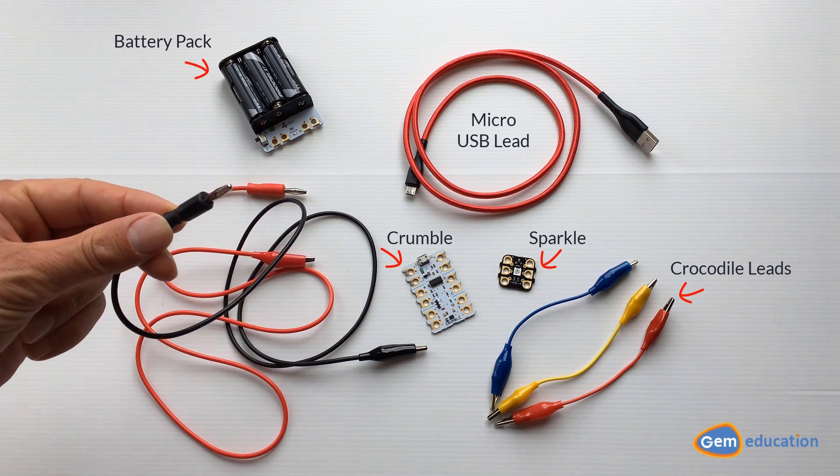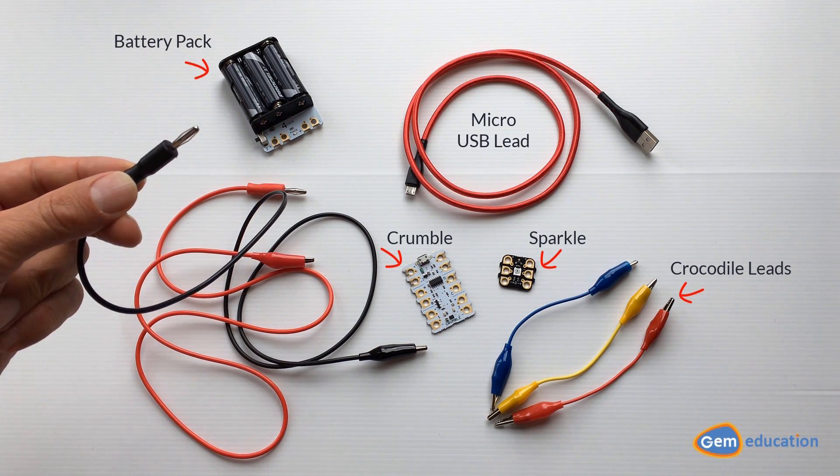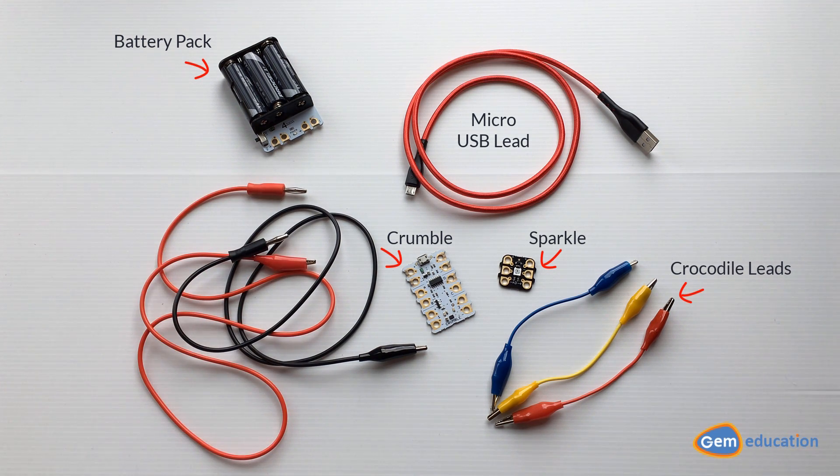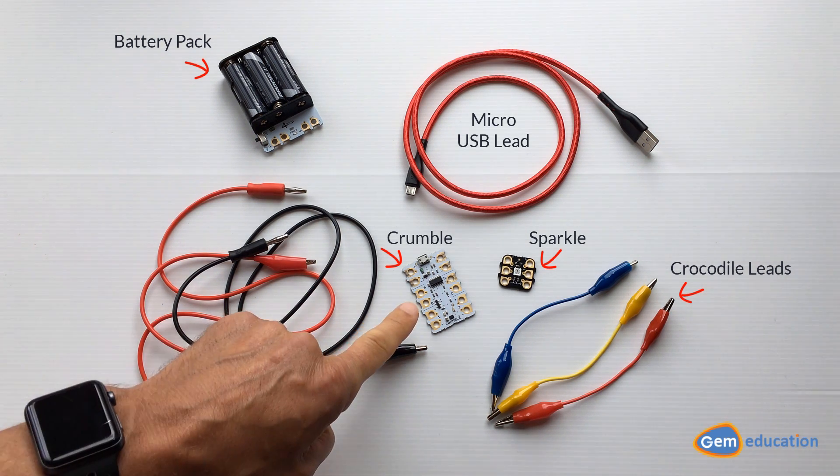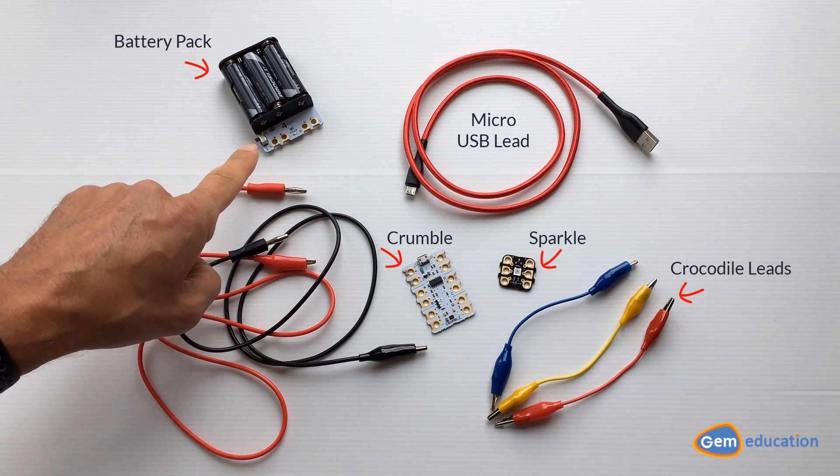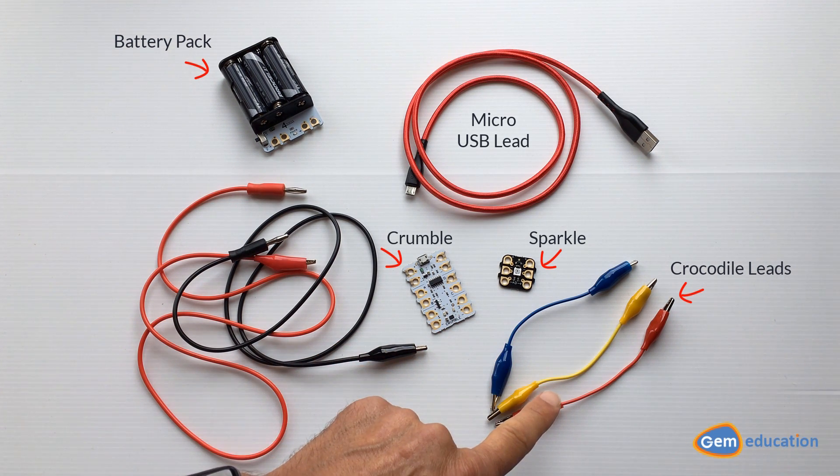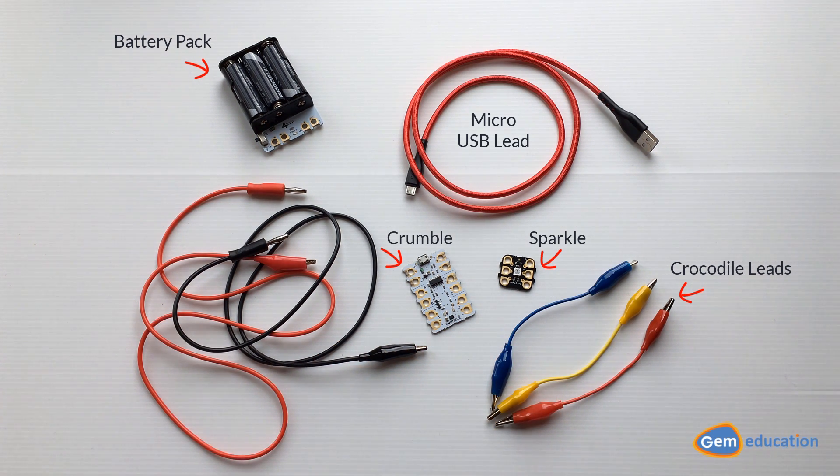These ones have banana clips at the end because they're a little bit easier to use. If you're working with a partner, you could have one person connecting the crumble to the battery pack while the other person connects the sparkle to three crocodile leads.